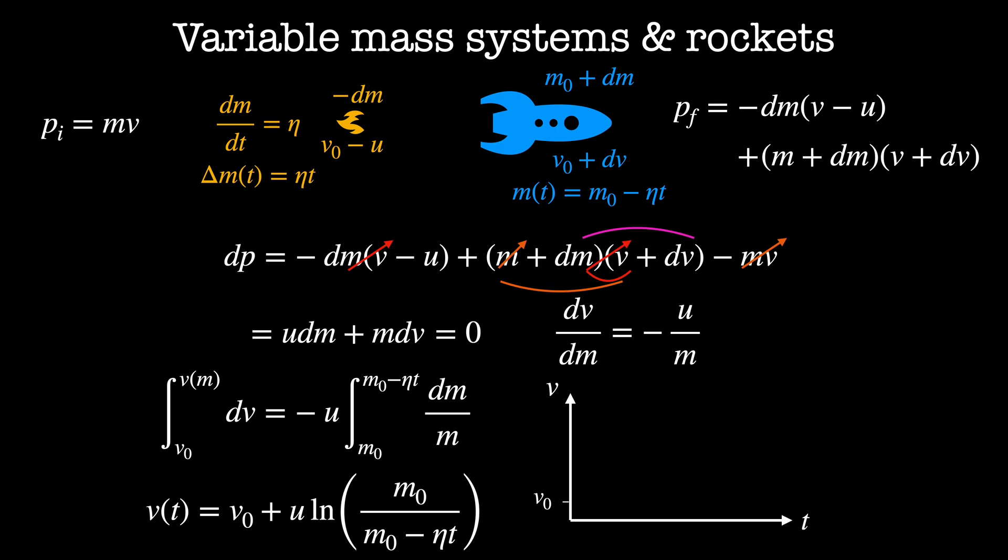So what does this look like? At time zero, eta t equals zero, which means that this term looks like the log of one, which also equals zero, which means that we start at speed v-naught, which is a good sanity check. Then as time increases, m-naught minus eta t decreases, which means that this whole term increases logarithmically. We eventually reach a pathological point where time is equal to m-naught divided by eta, where all of the mass is expelled from the rocket. When we do this, we're trying to accelerate something with zero mass, so that limit's unphysical.